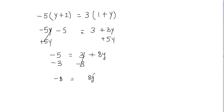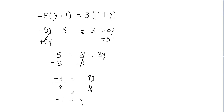I have 8 times y. To undo multiplication we divide. So I'm going to divide both sides of my equation by 8. Negative 8 divided by 8 gives me negative 1, and on the right side 8 divided by 8 gives me 1, and 1 times y is still y. So we got negative 1 equals y — y equals negative 1. That's my final answer.